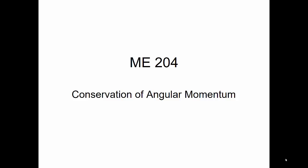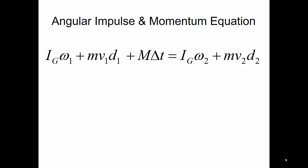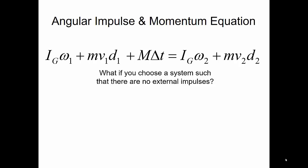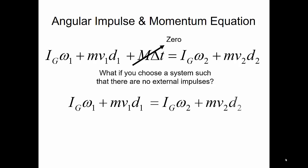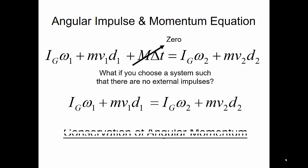ME204, conservation of angular momentum. We've established the angular impulse and momentum equation as listed here. What if I choose a system such that there are no external impulses? In that case, I would eliminate my moment times the change in time, and my equation would look something like this. In this case, I have conservation of angular momentum — there are no external moments or forces, so the momentum is conserved.